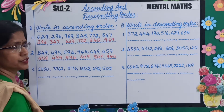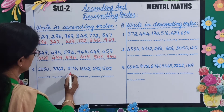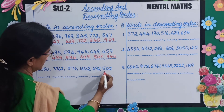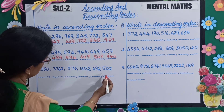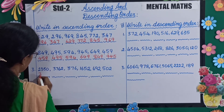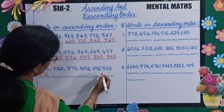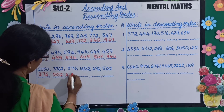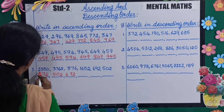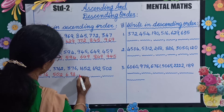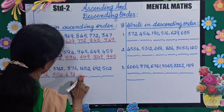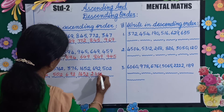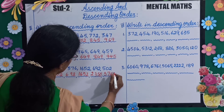Next set: 2350, 3762, 376, 1652, 692 and 502. So which is the smallest number? 376. Next is 502. Very good. Next is 692. Now the next number is 1652, then 2350, and last is 3762.